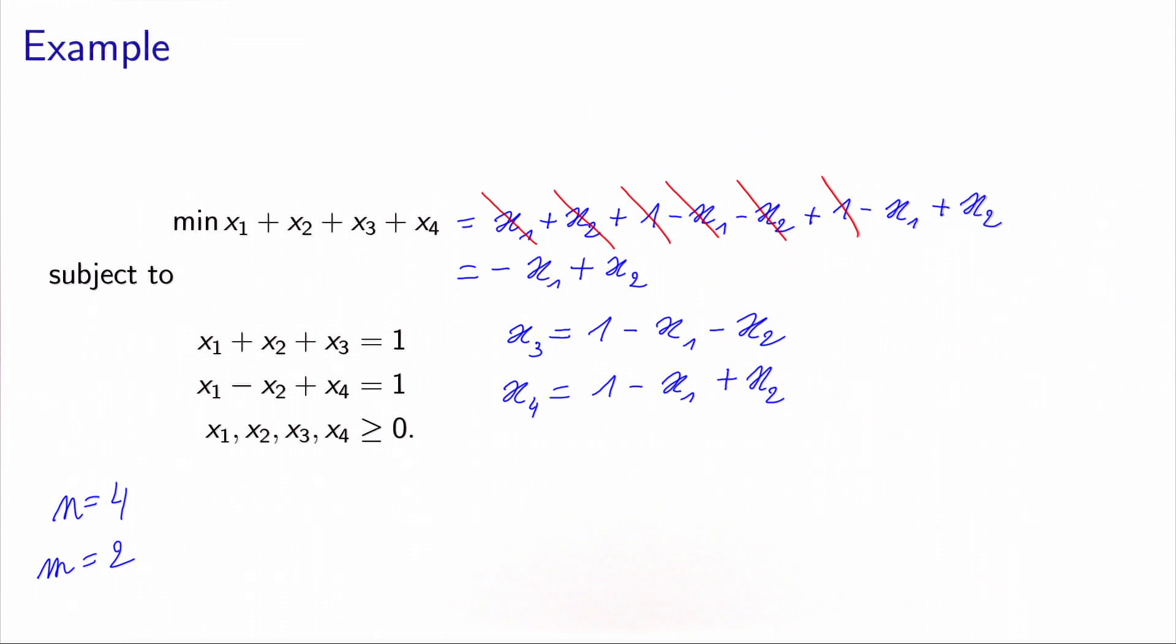We have no more equality constraints. Our objective function involves only the variables x1 and x2. But we still have the inequality constraints. And be careful, even if we have removed x3 and x4, we cannot get rid of the constraints that say that these variables must be non-negative.